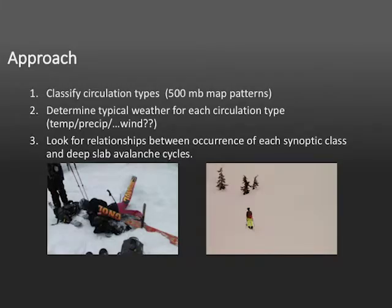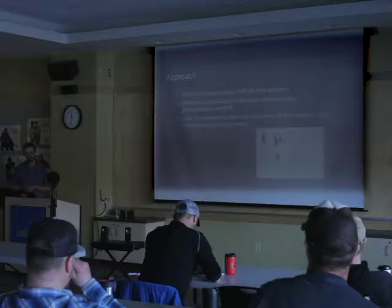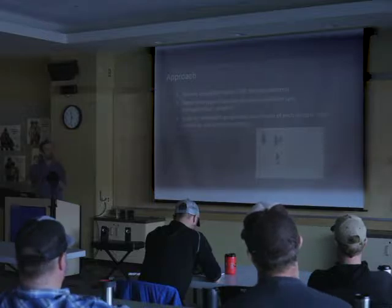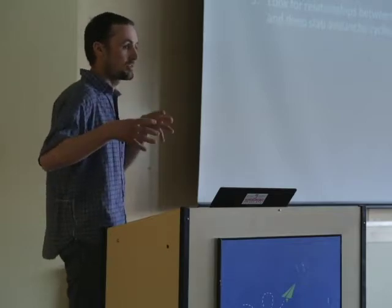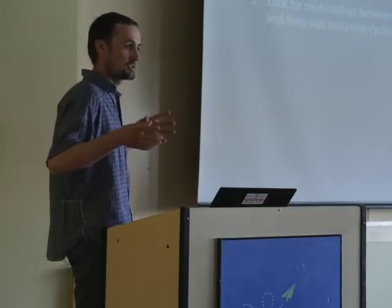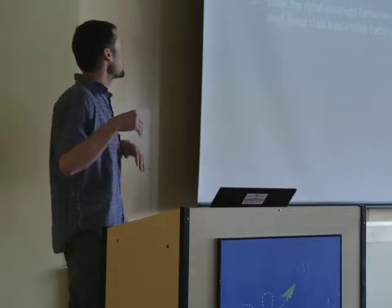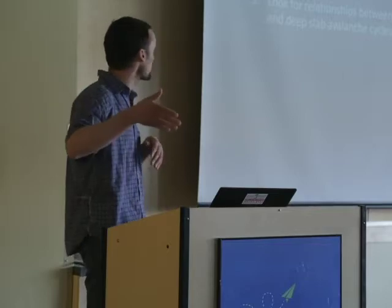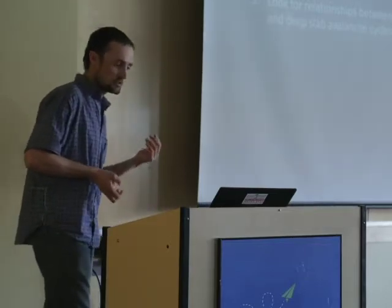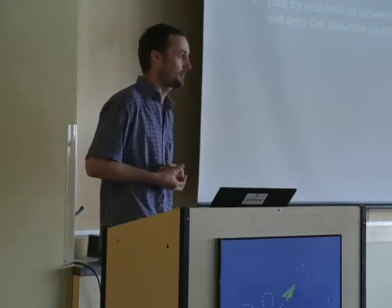The way I'm going to approach this is I'm going to take a look at a really long record of 500 millibar height maps. We're going to classify them into different groups — we'll basically start with over 6,000 days and boil it all down to 20 different maps that we can work with, so we're not dealing with such a huge data set. Then I'll determine the typical weather observed for each pattern — including temperature and precipitation. Ideally I'll get wind in there at some point, but I haven't been able to find that record, so that's something I'm still working on.